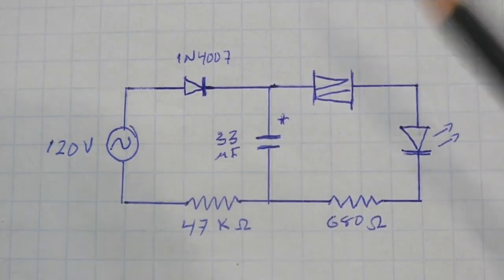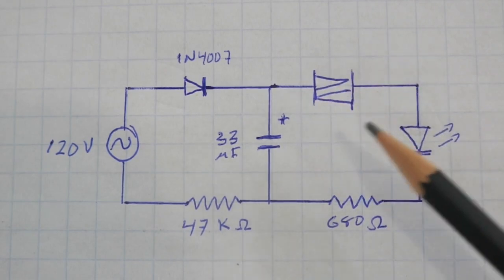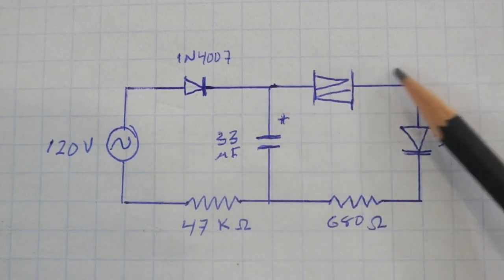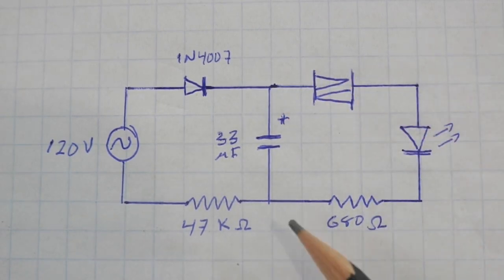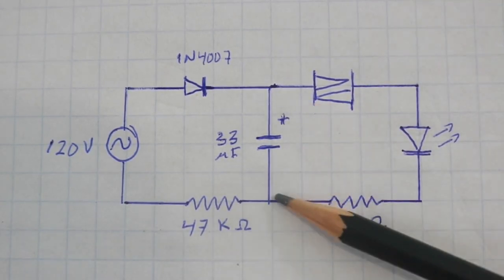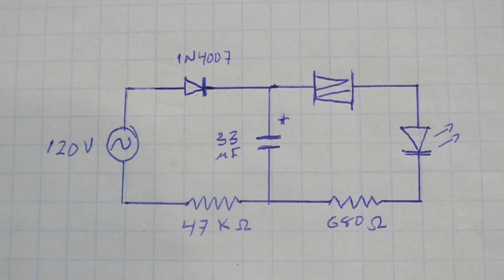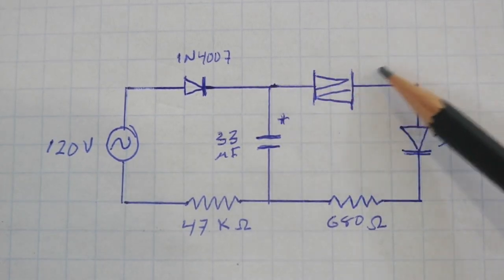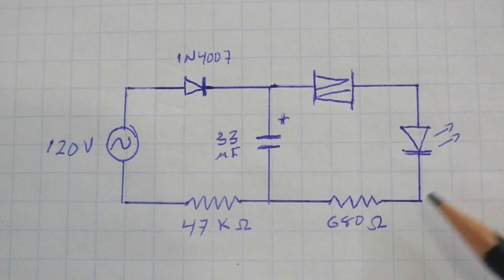Remember that the DIAC acts like a switch. It is initially open, so the current cannot flow through the LED. But when the voltage at the capacitor terminals reaches 30 volts, the DIAC closes and the current can flow through the LED and its resistor.